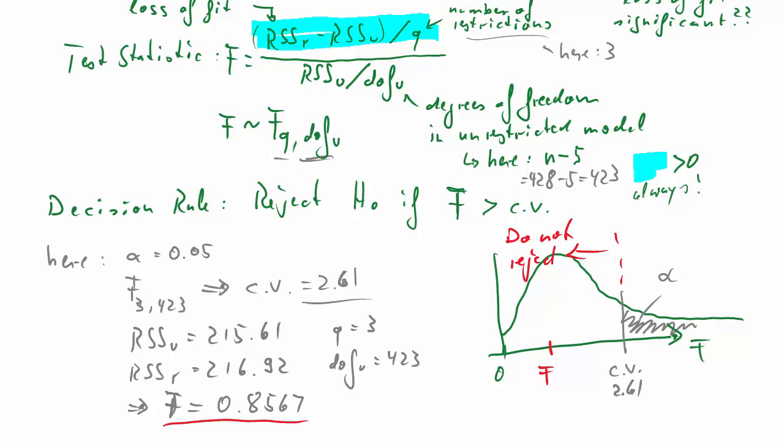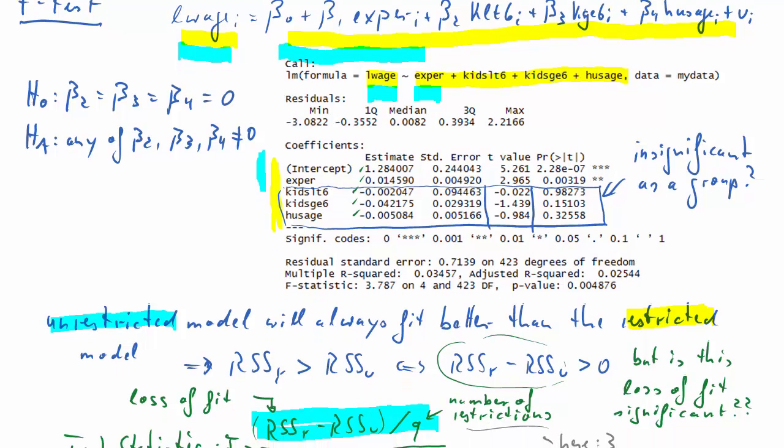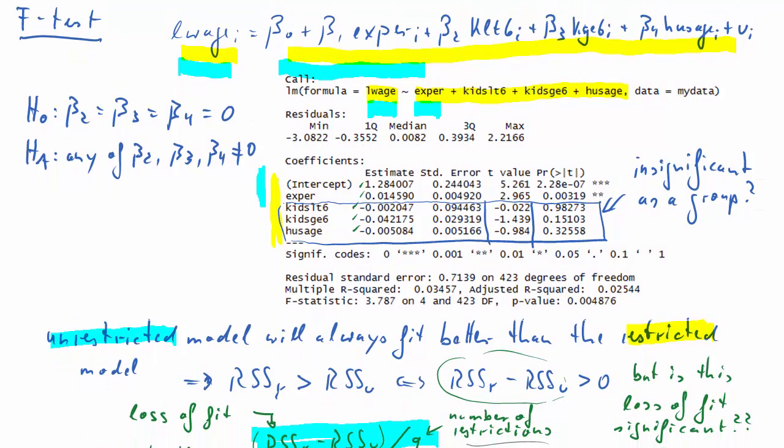Our actual test statistic is 0.86 approximately. So our test statistic is in the DO NOT REJECT H0 region. Only if the test statistic had been larger than a critical value, we would have rejected. So here the decision is that we do not reject the null hypothesis. What does that mean? Let's go back to our model and the null hypothesis. The null hypothesis was that beta2, beta3, and beta4 were equal to 0. That means the three variables that describe the family circumstances are irrelevant, and the small, the restricted blue model is actually the model we would adopt. So we can sort of get rid of these three variables.